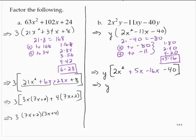I'd have y times, let's see, 2x squared plus 5x. That's x by 2x plus 5. Then minus 16x minus 40, that's the same as negative 8 by 2x plus 5.